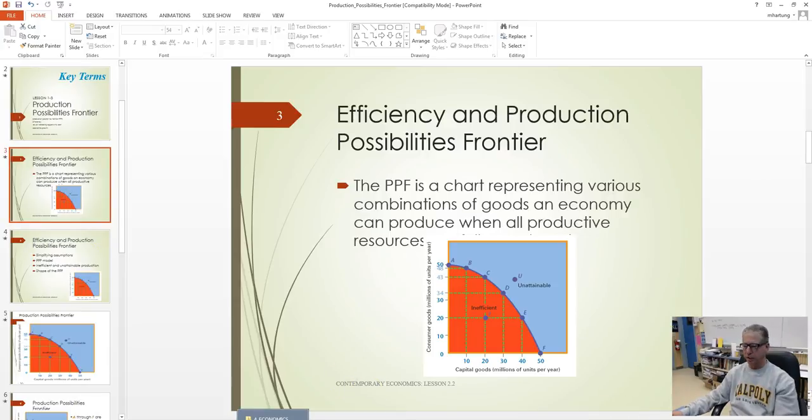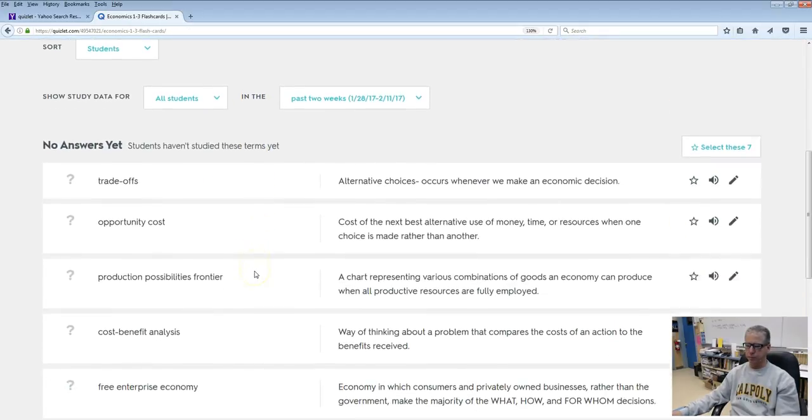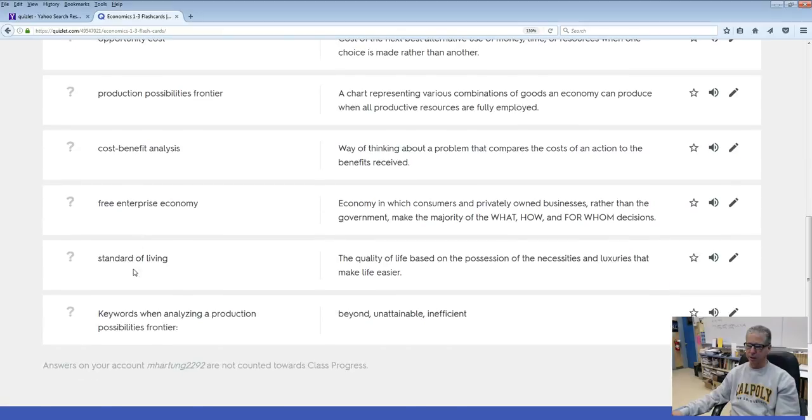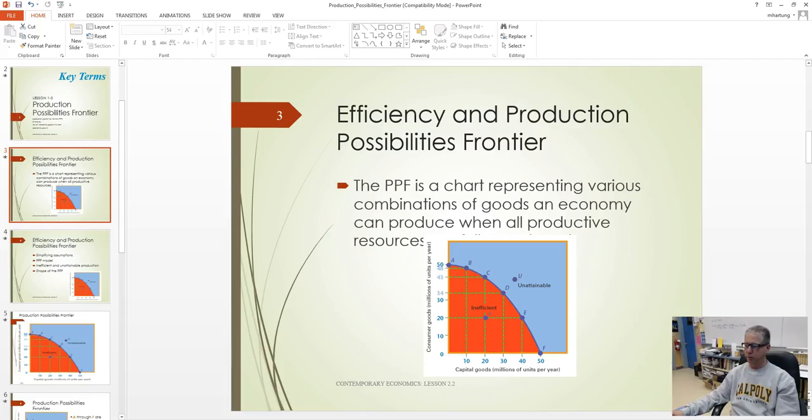As part of this lesson, you will want to spend some time over at Quizlet, Economics 1-3. There's seven major terms over there to learn: trade-offs, opportunity cost, the frontier, cost-benefit analysis, and a few other words to become familiar with as we discuss this.